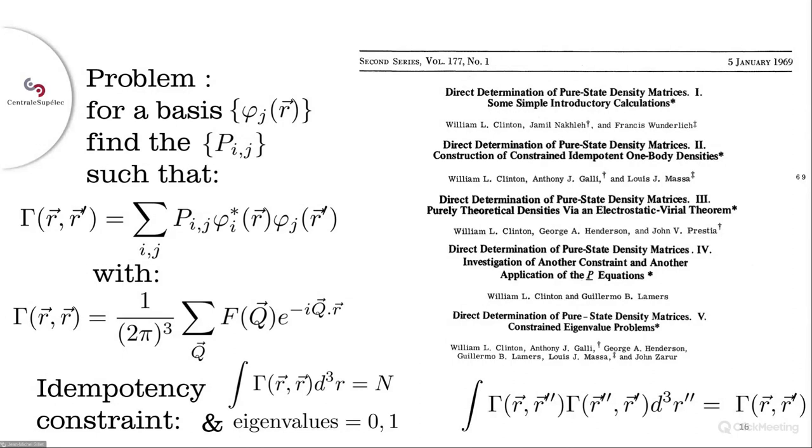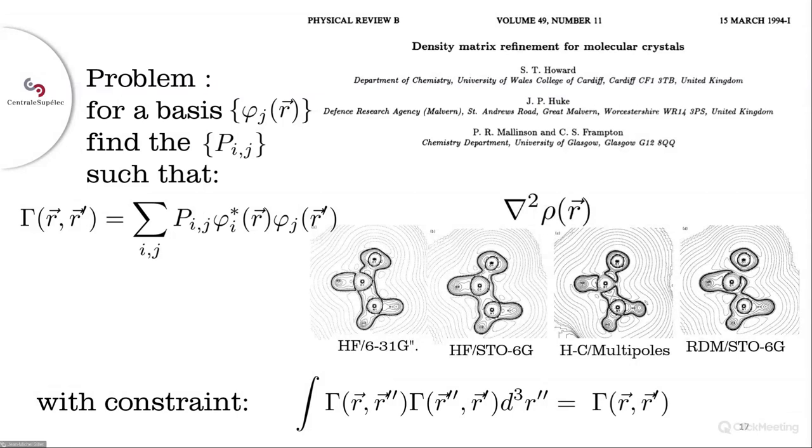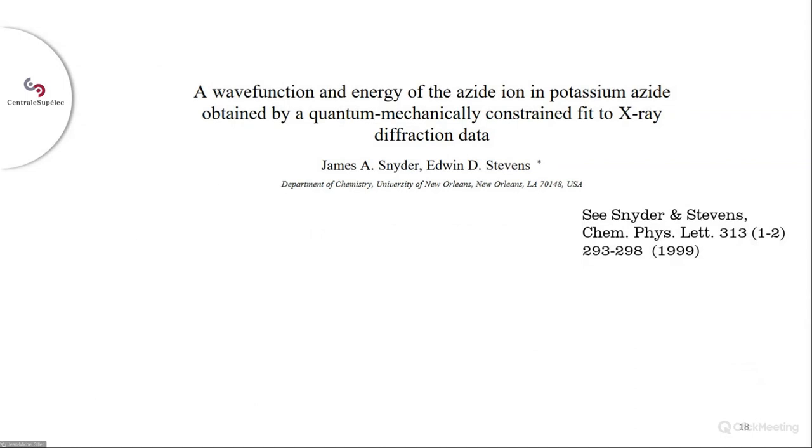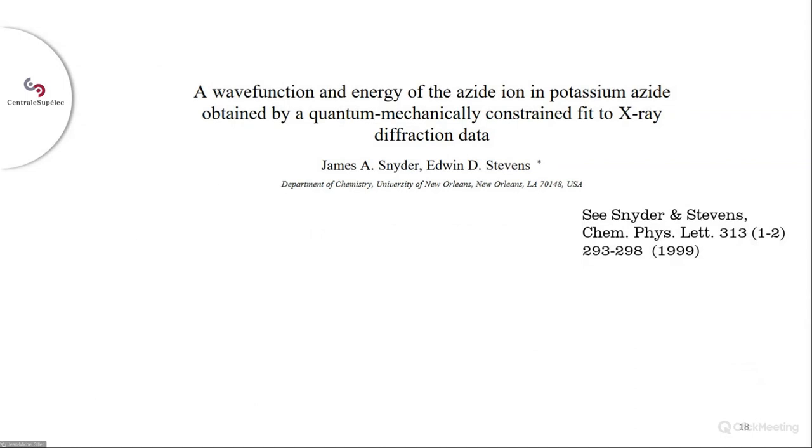As an example, this method has been applied by Howard and co-workers. Unfortunately, they did not really consider the matrix. Only the diagonal is discussed in their paper using a data set of about 2,000 X-ray reflections. They compare on this figure the Laplacian of the density obtained using the Hansen-Coppens model and using the idempotent 1RDM refinement.